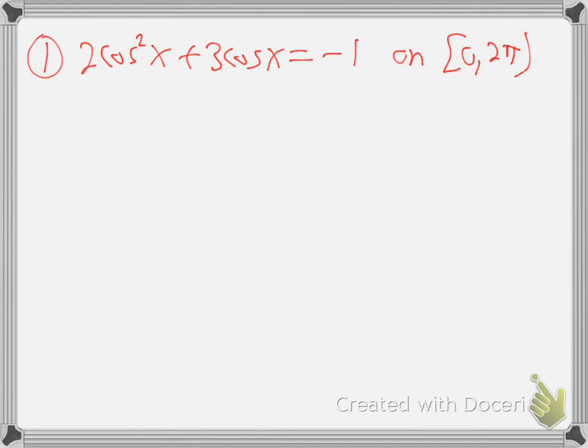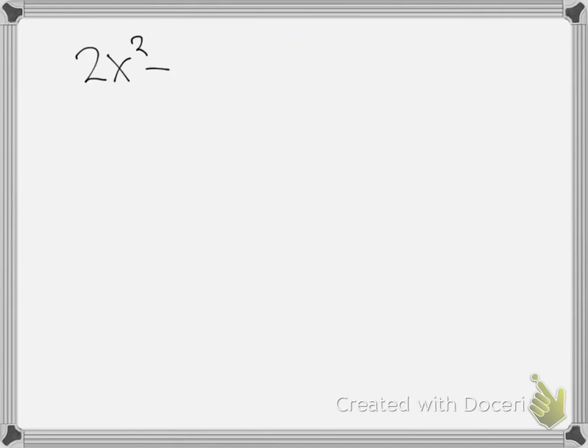Let me go to a fresh screen. 2x² + 3x = -1. How would you solve if it was just x instead of that cosine? Just let's yank out the cosine. Think about solving that equation. Can you, do you know how to solve that equation?